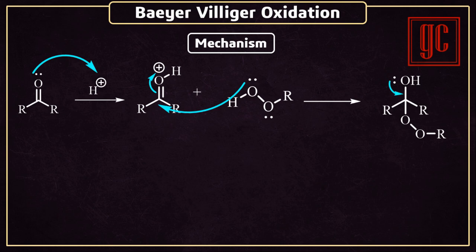Now the lone pair of the oxygen comes down, and as a result, an anionotropic shift of the alkyl group from carbon to oxygen takes place. The final product, esters, are formed.